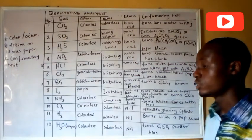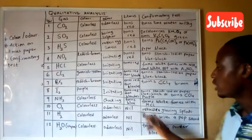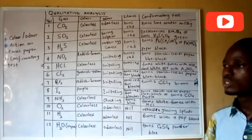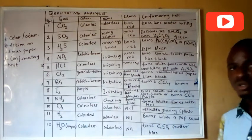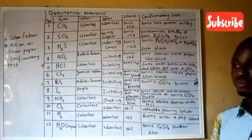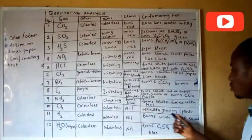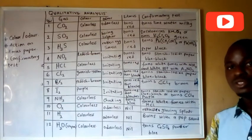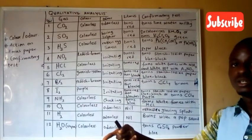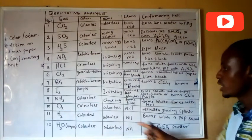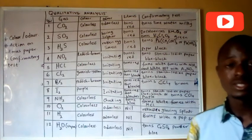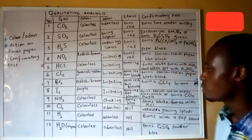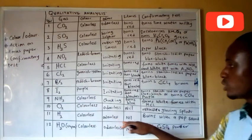Oxygen is colorless and has no action on litmus paper, making it a neutral gas. The confirmatory test: because oxygen supports combustion, introducing a glowing splint to the gas causes the splint to rekindle. Only oxygen supports combustion in this way.